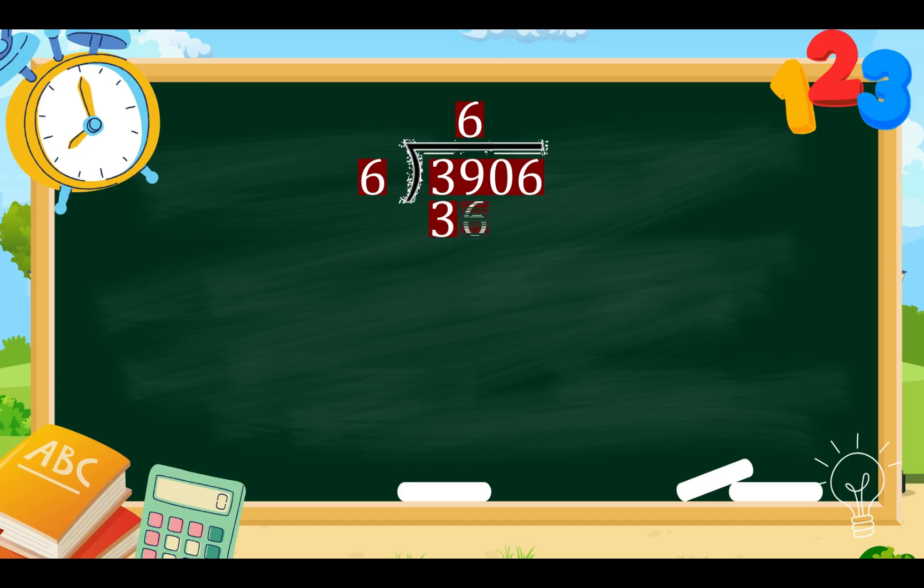Multiply 6 times 6 equals 36. Subtract 39 minus 36. We have 3. Bring down 0. 30 divided by 6 equals 5. 5 times 6 equals 30. Subtract 30 minus 30. We have 0. So, we have 1 more number left. Bring down 6. Now, 6 divided by 6 equals 1. And 1 times 6 equals 6. 6 minus 6 equals 0.